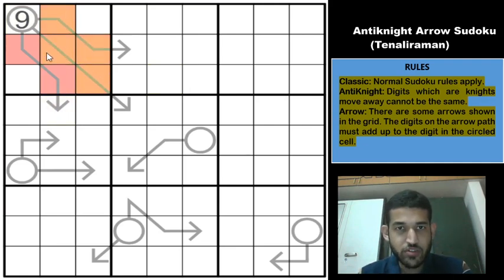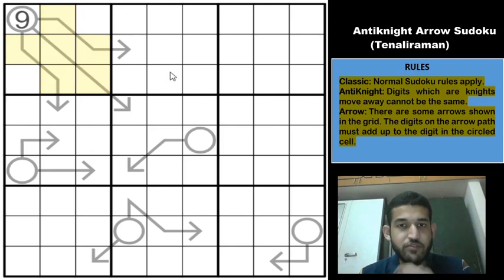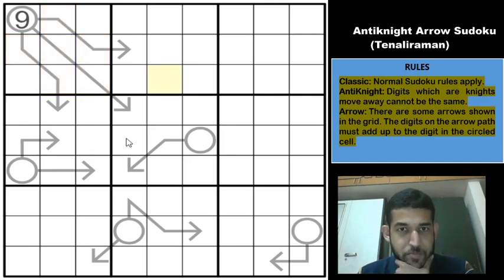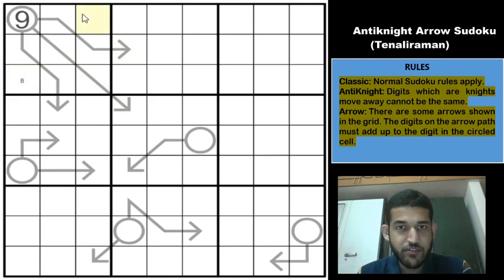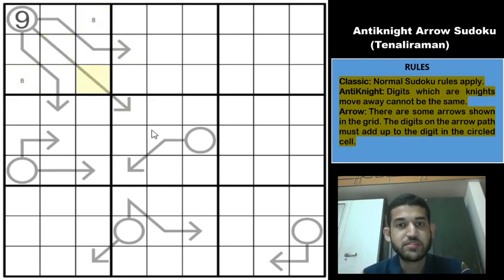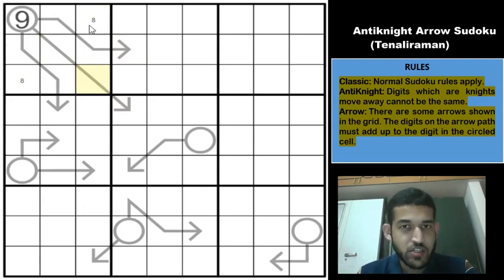Now let us use minimum-maximum concepts to see if we can progress. Since all three arrow stems are 3 cells in length, we can easily eliminate 8 from the arrow stems, because if you have 8 in one of them the minimum total becomes 10 (8+1+1), which is too high. So 8 will be outside the arrow stems.